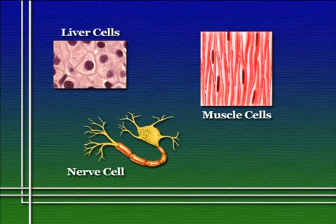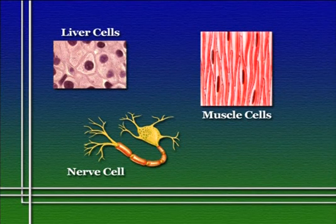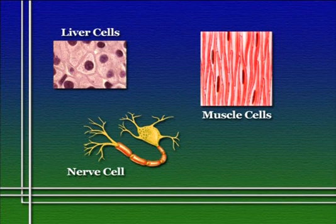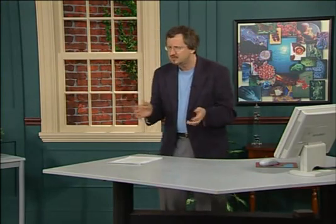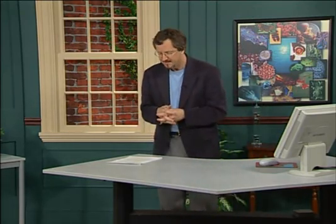Differences in the way cells function often relate to differences in the way cells are shaped. Muscle cells are elongated, for example. Brain cells often have long extensions protruding from them that serve as a kind of cellular wire — we'll look at that later in the course. Different cells have different shapes, but the really critical differences between different kinds of cells have more to do with molecules than morphology.